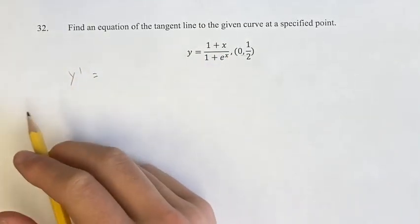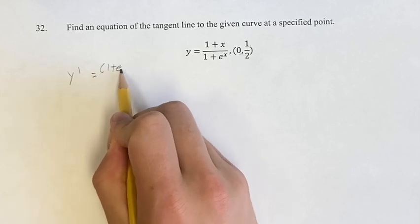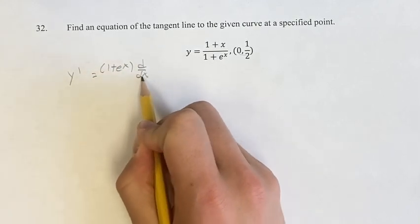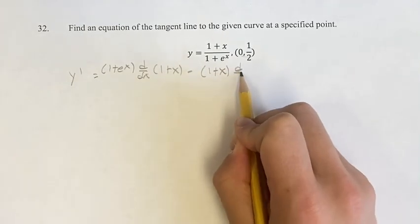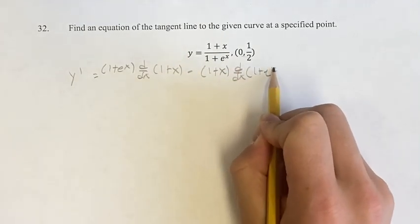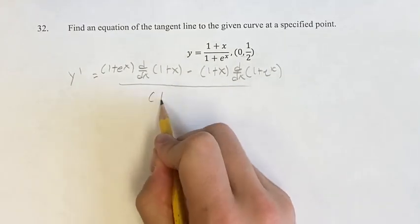So we have the denominator times the derivative of the numerator minus the numerator times the derivative of the denominator over the denominator squared.